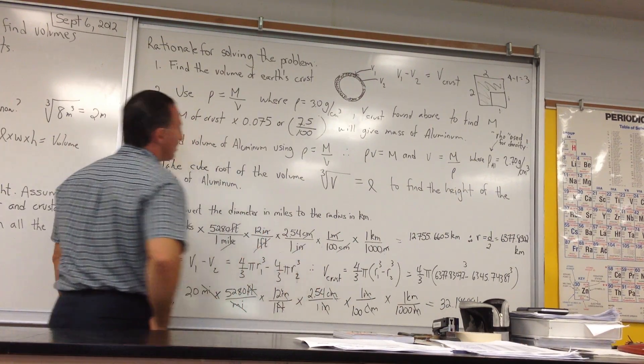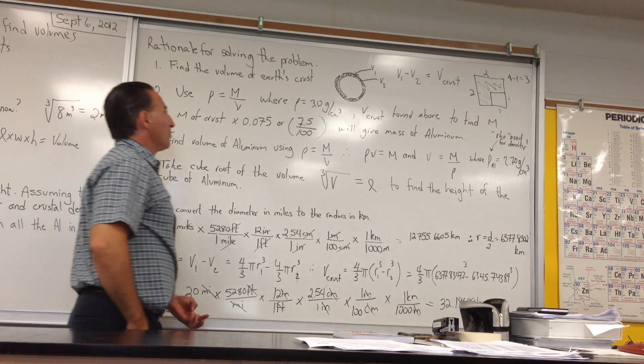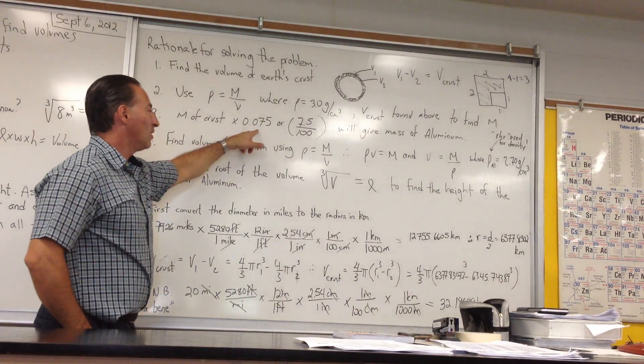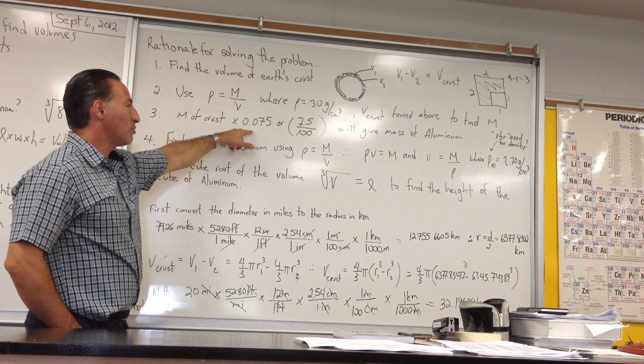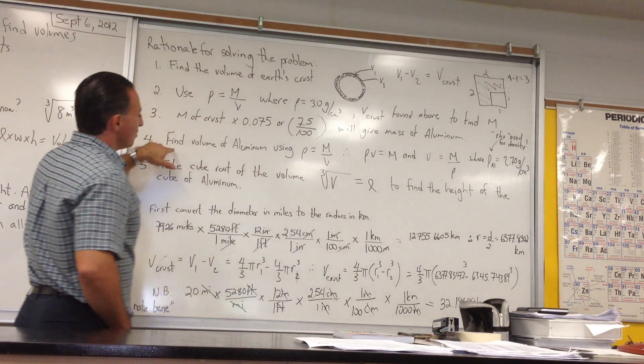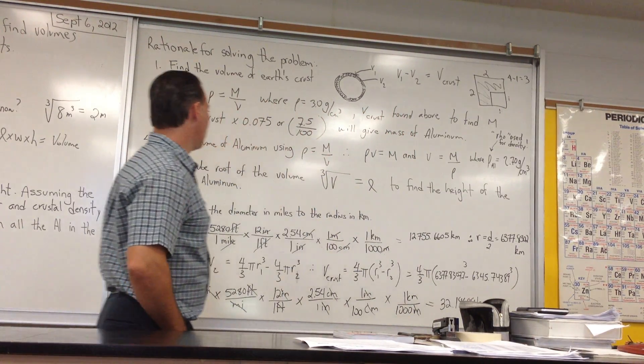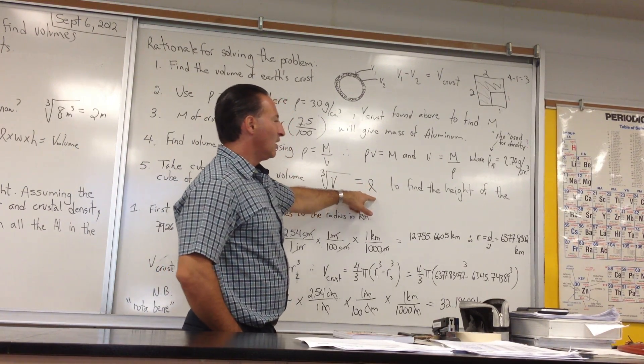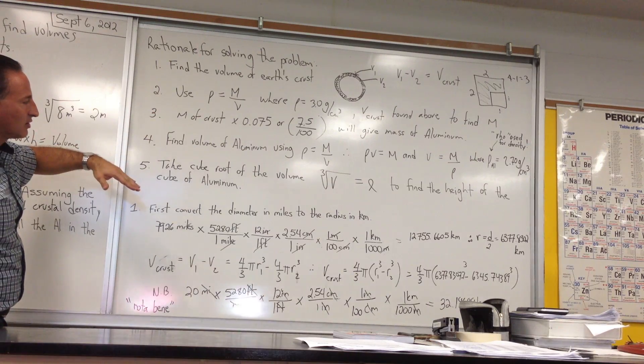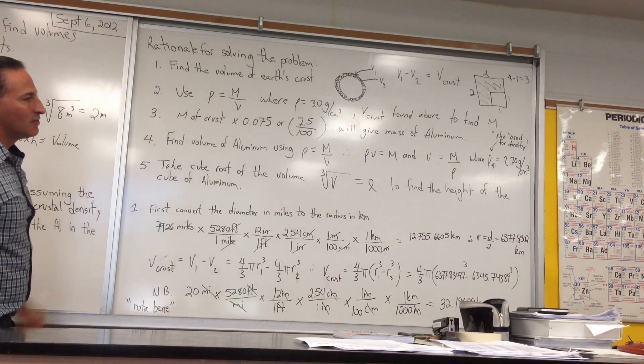Now we're going to use the density formula, rho equals mass over volume, where the crustal density is 3.0 grams per centimeter cubed, and rearrange the equation to find the mass of the Earth's crust. In the third step, we're going to use the mass of the Earth's crust multiplied by 7.5%, because 7.5% of the mass is pure aluminum. Then we use the density formula again to solve for volume, to find the volume of aluminum in the Earth's crust. Thus, we can take the cube root of the volume to find the length or height of a cube made of pure aluminum. That's our rationale. We set up the steps, and when you have it set up in discrete steps, each individual step is actually quite easy.